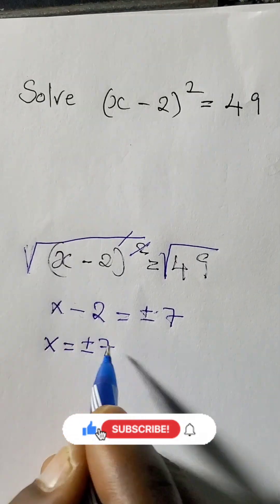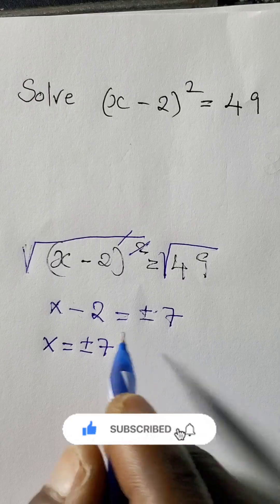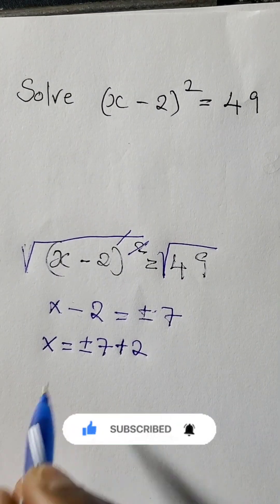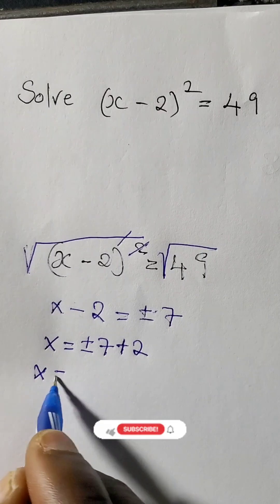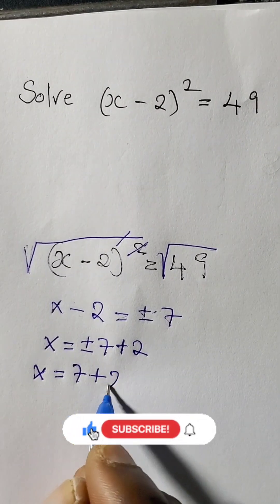We add 2 on both sides, so we can say 7 plus 2.